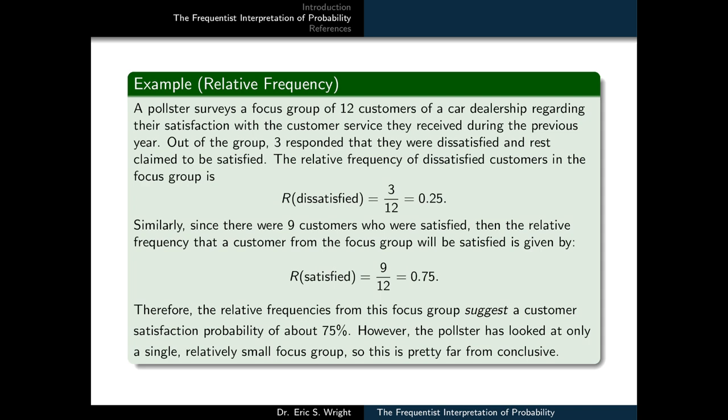Similarly, there were 9 customers who were satisfied, and the relative frequency that a customer from the focus group will be satisfied is given by 9 over 12, or 75%. Therefore, the relative frequencies from this focus group suggest a customer satisfaction probability of about 75%. However, the pollster has looked at only a single, relatively small focus group, so this is pretty far from conclusive.